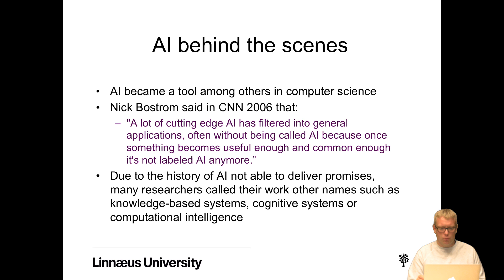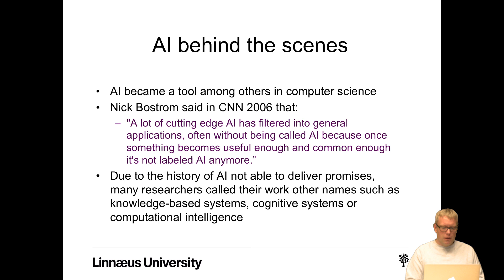Due to the history of AI failing to deliver on promises, many researchers called their work by other names such as knowledge-based systems, cognitive systems, or computational intelligence. But nowadays AI is really popular — more popular than it has been for a long, long time — especially with the growing interest in deep learning, which is starting to change things.